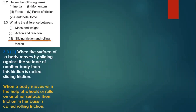When the surface of a body moves by sliding against the surface of another body, the friction is called sliding friction. In this case the most points are in contact with the surface, so we face more friction. When a body moves with the help of wheels or rolls on another surface, the friction is called rolling friction. Rolling friction is always less than sliding friction because the point of contact is much smaller.